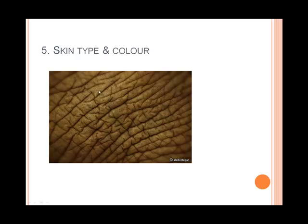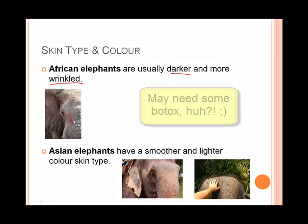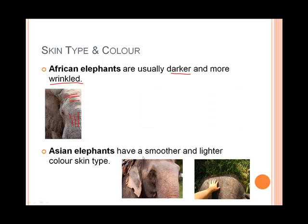Finally, skin type and color. African elephants are darker and more wrinkled, as you can see here. Whereas Asian elephants have a much smoother and lighter skin color. They still have a bit of wrinkles but it's not as obvious. And another thing is that the Asian elephant is much hairier than its African cousin.